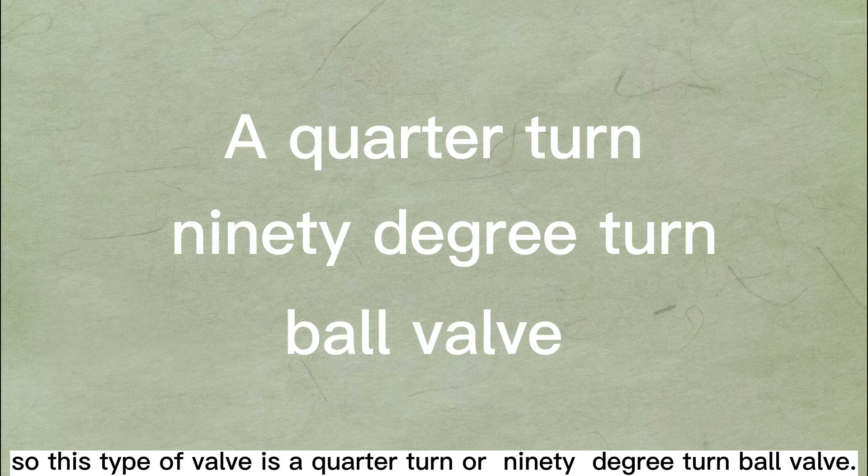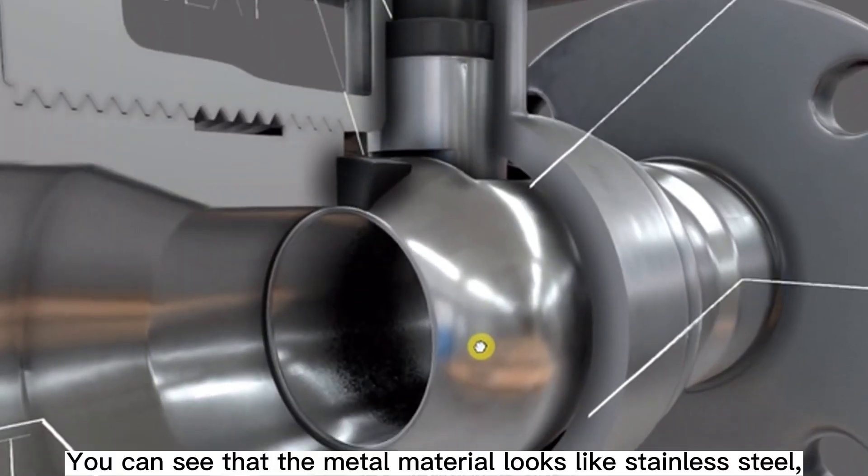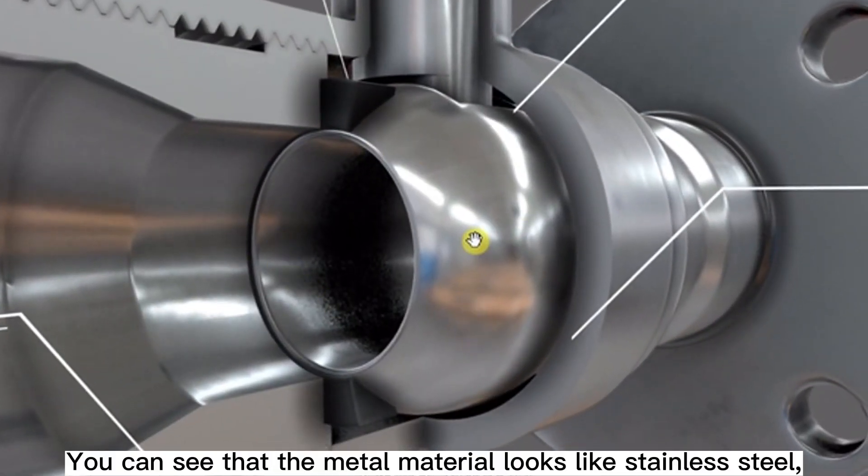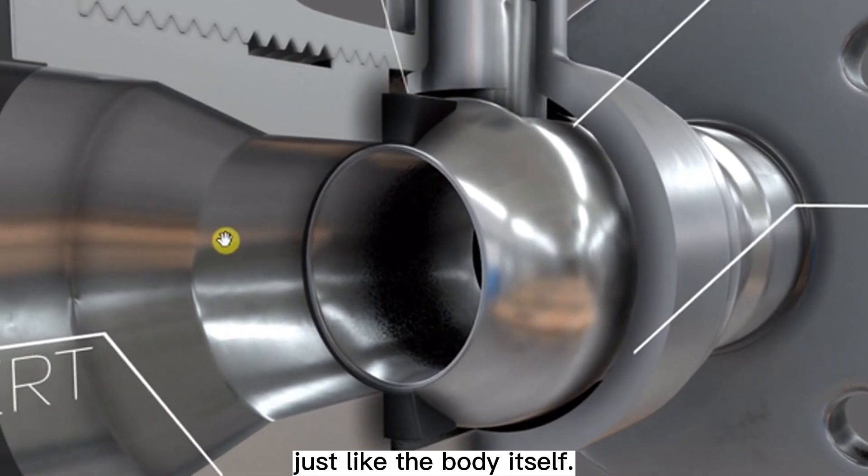So this type of valve is a quarter turn or 90 degree turn ball valve. You can see that the metal material looks like stainless steel, just like the body itself.